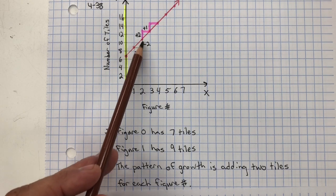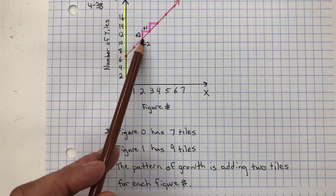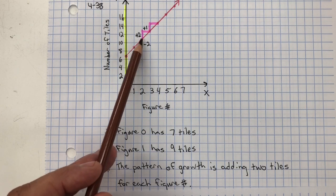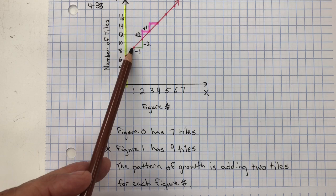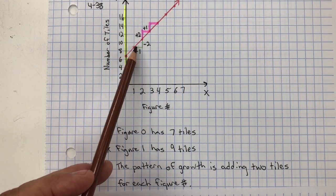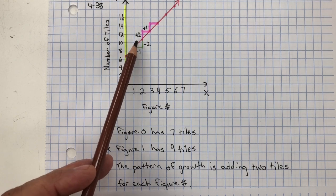The one that was given is here, and you see that it's going down negative two and over negative one. Well, negative two divided by negative one is still positive two. So it still has the same growth pattern of two over one.